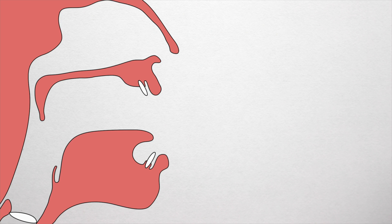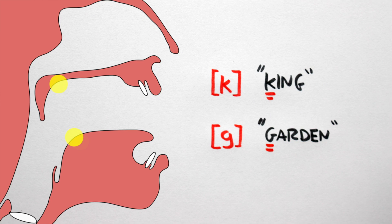Eight, velar. Here, the obstruction occurs when the back of the tongue touches the soft palate at the back of the mouth. Again, in English, we have two sounds here: ka as in king, and ga as in garden.